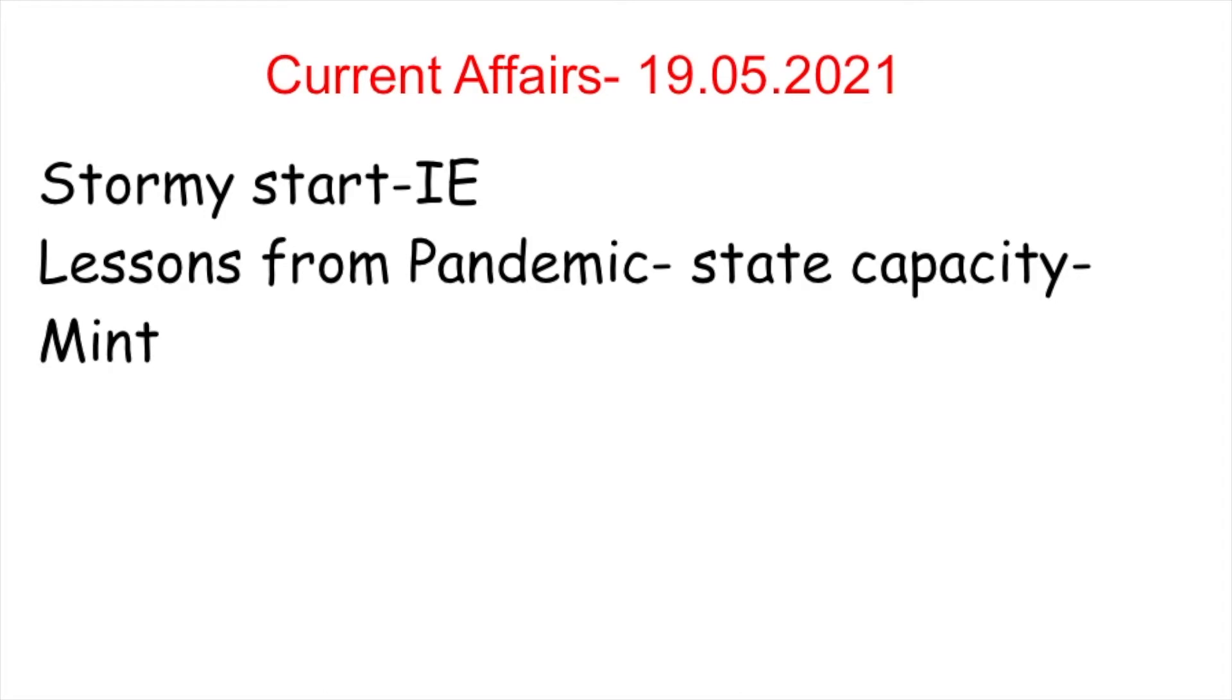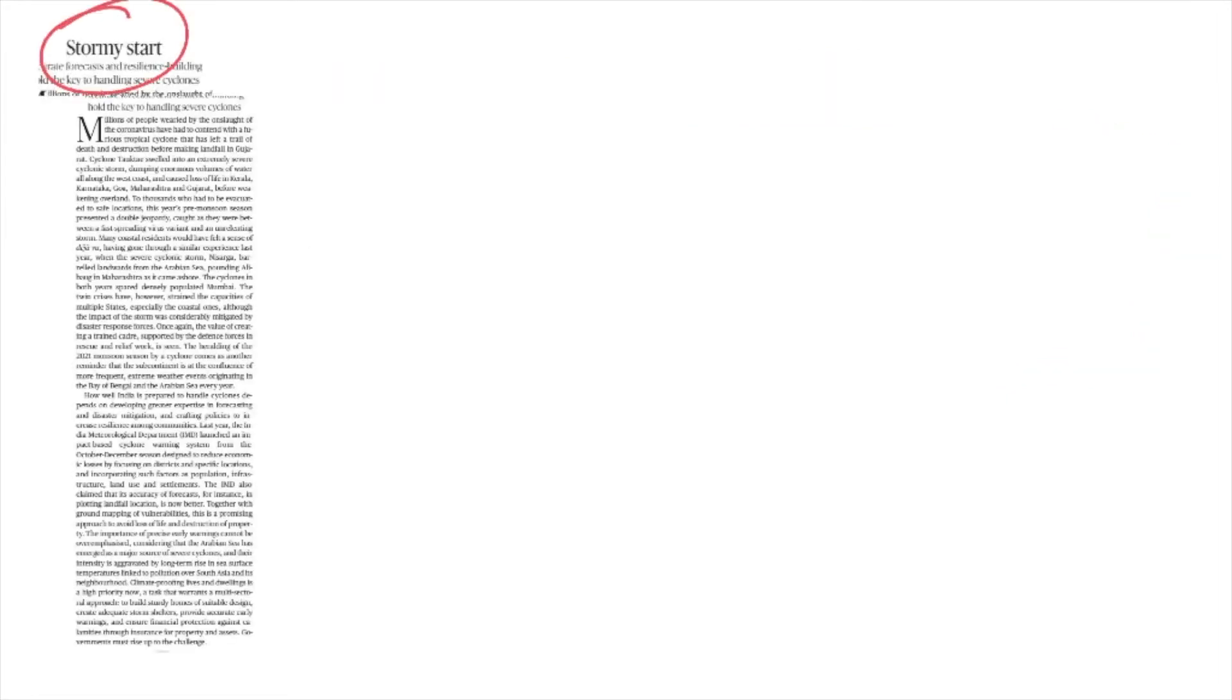Hello everyone, welcome to Analog IAS current affairs analysis for 19th of May 2021. These are the issues we will be discussing today. Stormy Start refers to Cyclone Tauktae which made landfall on the western coast of India in Gujarat, creating loss of life and destruction of infrastructure.